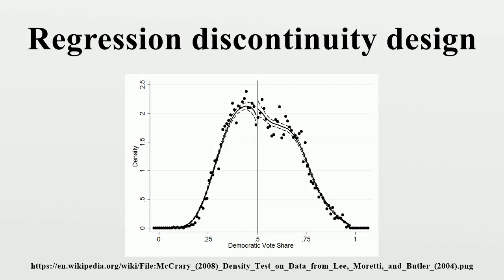If discontinuities are present at other points of the assignment variable where they are not expected, then this may make the regression discontinuity design suspect. Consider the example of Carpenter and Dobkin, who studied the effect of legal access to alcohol in the United States. As access to alcohol increases at age 21, this leads to changes in various outcomes, such as mortality rates and morbidity rates. If mortality and morbidity rates also increase discontinuously at other ages, then it throws the interpretation of the discontinuity at age 21 into question.